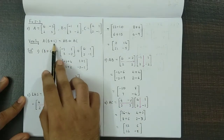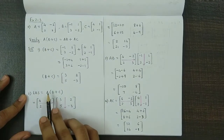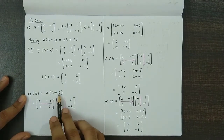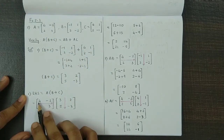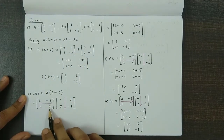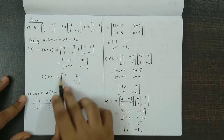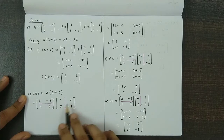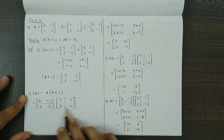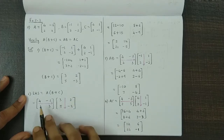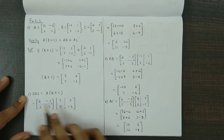Now we have obtained B plus C. We multiply this with A, so the left hand side is A times B plus C. We bring down matrix A: 4, minus 2, 2, and 3, and we bring down matrix B plus C: 3, 2, 5, minus 3. Now we multiply the two matrices — rows multiplied by columns.